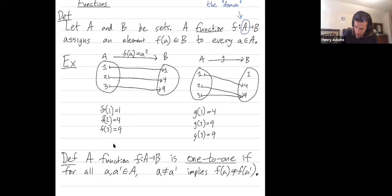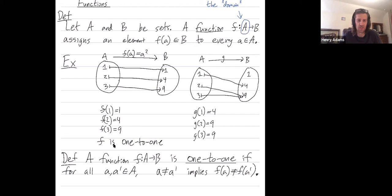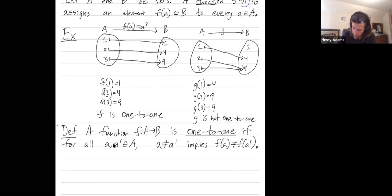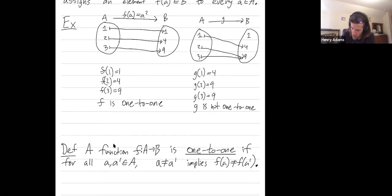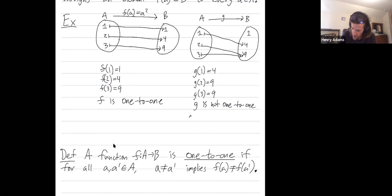So the map f in our example is one-to-one: the different inputs all go to different spots. One goes to a different spot than two does, which goes to a different spot than three does. G is not one-to-one, and here's why: g of two equals g of three, even though three is not equal to two. So g takes two different inputs but sends them to the same spot.